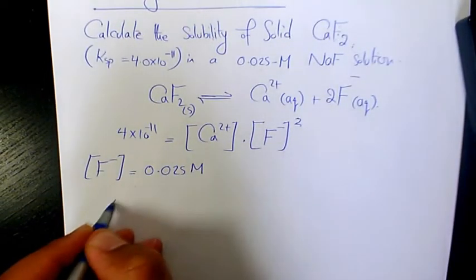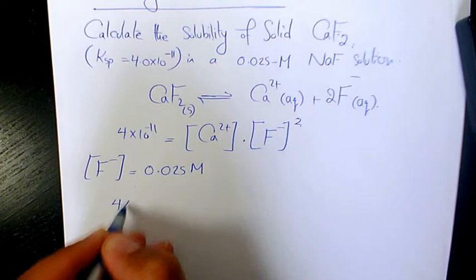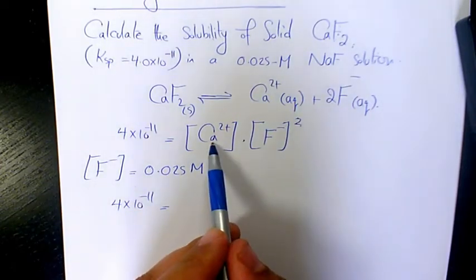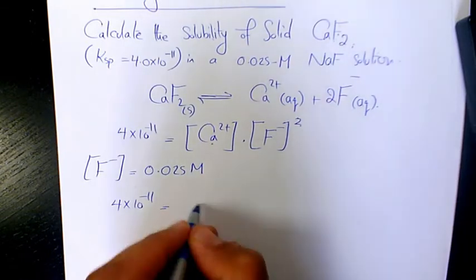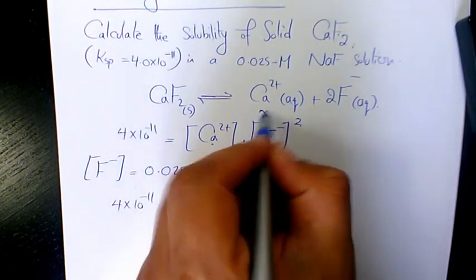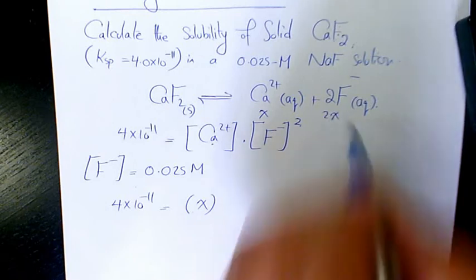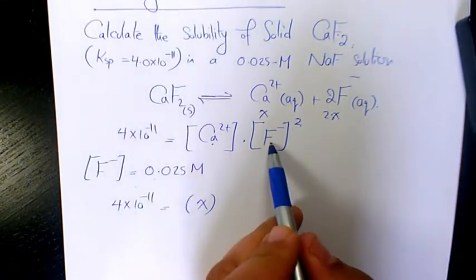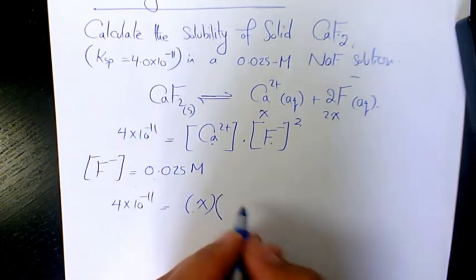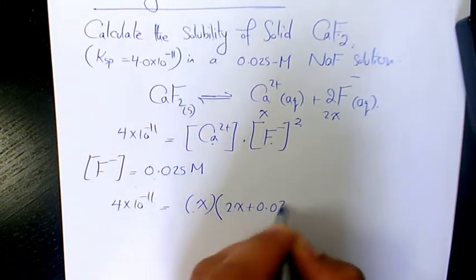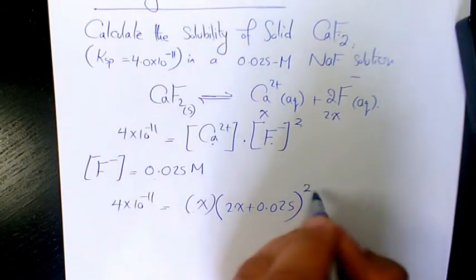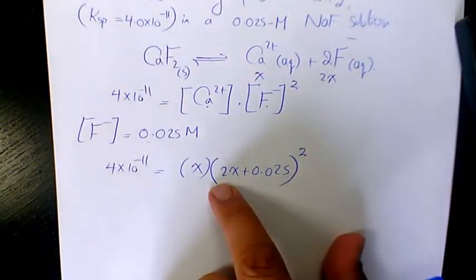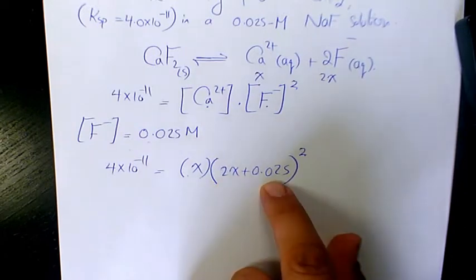So we're going to say from here, 4 times 10 to the power of negative 11 equals calcium, if we assume that is x. Fluoride is going to be 2x, so it's going to be 2x plus the initial amount. So instead of fluoride, I can put 2x plus 0.025 to the power of 2. Now if I assume that I can neglect 2x with respect to 0.025...